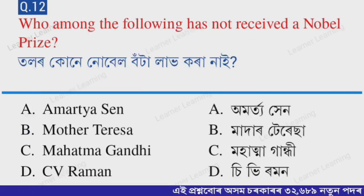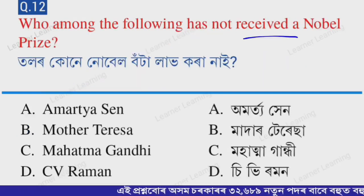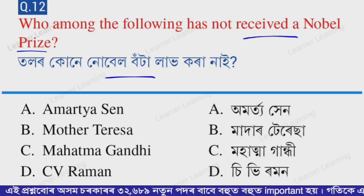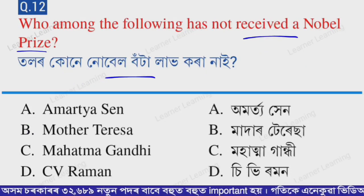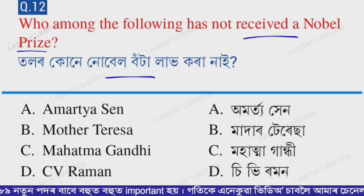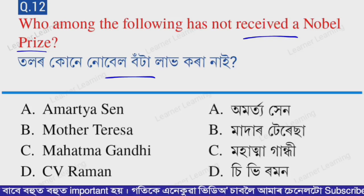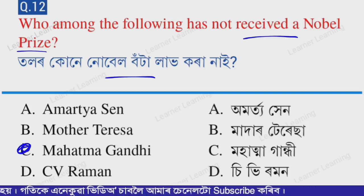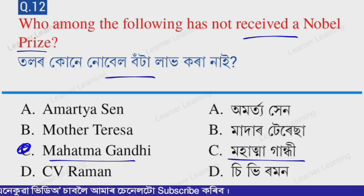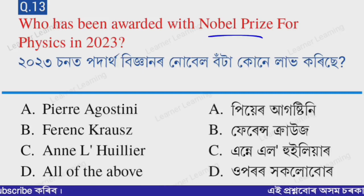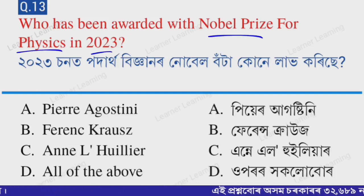Next question: Who among the following has NOT received a Nobel Prize? Options: A — Amartya Sen, B — Mother Teresa, C — Mahatma Gandhi, D — C.V. Raman. The correct option is option C — Mahatma Gandhi. Mahatma Gandhi did not receive a Nobel Prize.